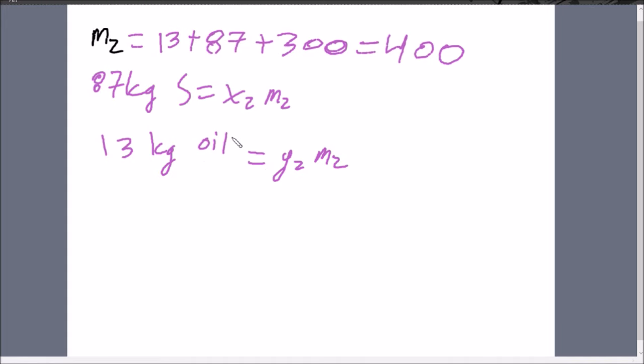The fraction representing the solid component and the fraction representing the oil component. Normally X and Y, X is always for mass base, and then Y is always for molar base. But in this question, because we're dealing with two states of matter, this is how we set it up. So for X2, simply, if we plug in our 400 kg here, do 87 divided by 400, you'll get that X2 is equal to 0.2175. And you'll get that Y2 is equal to 0.0325.